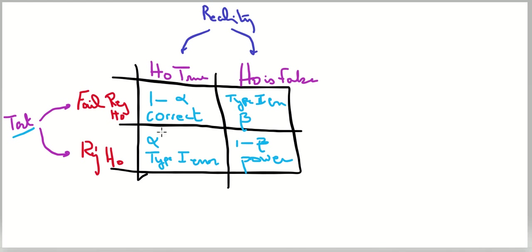We call type 1 error when the null is true but you reject it — this happens alpha percent of the time and resembles a false positive. The other scenario is that the null is false, meaning there is a difference in the population, but you fail to detect it in your sample — that's the false negative, or type 2 error, which should not exceed 20%. When the null is false and you correctly reject it, that's power (1 minus beta percent of the time), your true positive result.